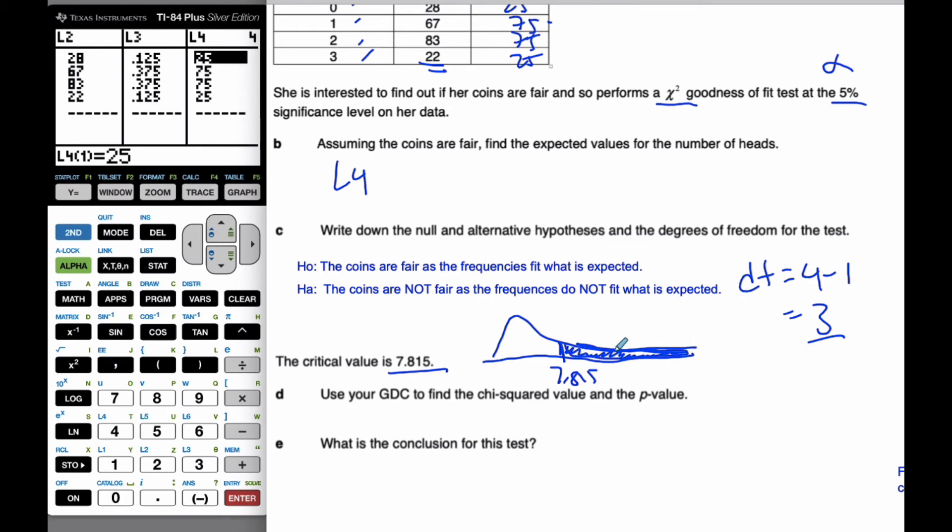so this defines the critical region. This is my critical region. So, if my chi-squared value fits in the critical region, then I will reject it. If it's less than 7.8 in this region, then I'm not going to reject the null hypothesis.